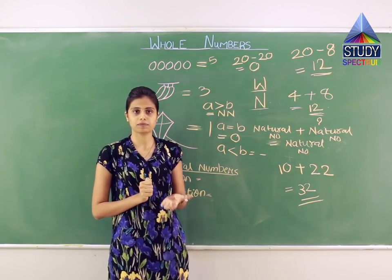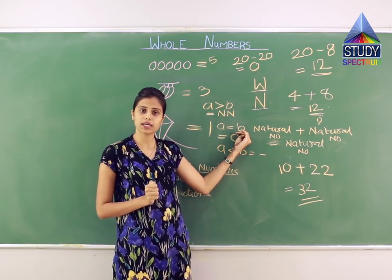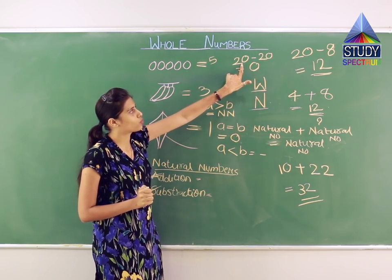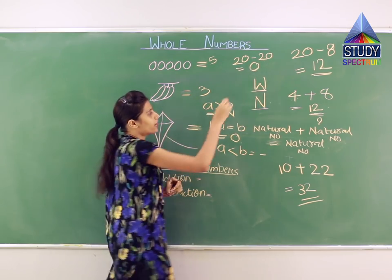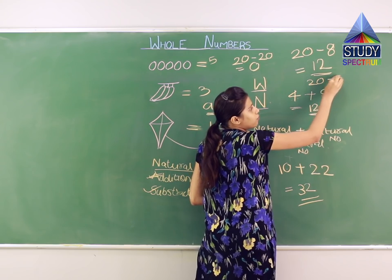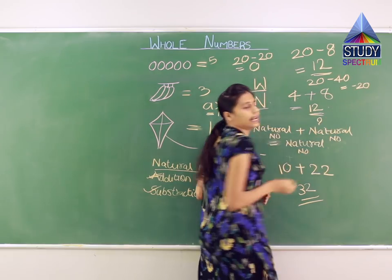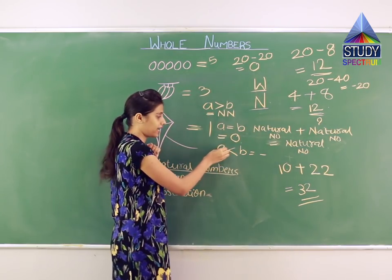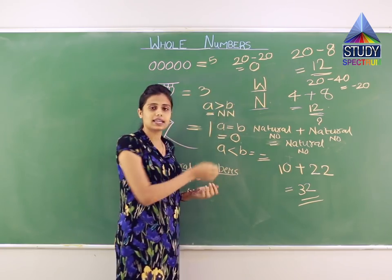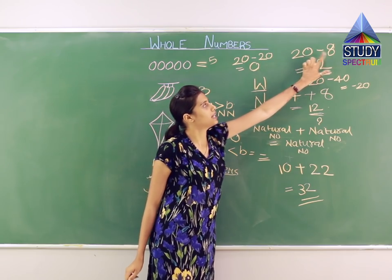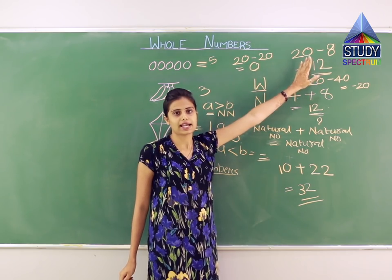The subtraction result depends on the values. If A is equal to B, the answer is 0. If A is less than B — for example, 20 minus 40 — the answer is negative 20. If A is greater than B, like 20 minus 8, the answer is positive and is a natural number. If A is less than B, the answer comes out negative.